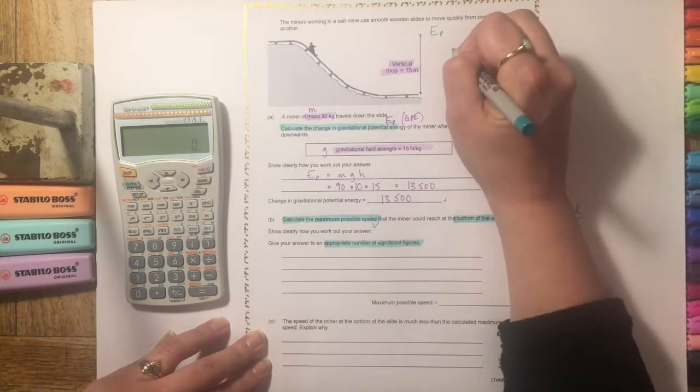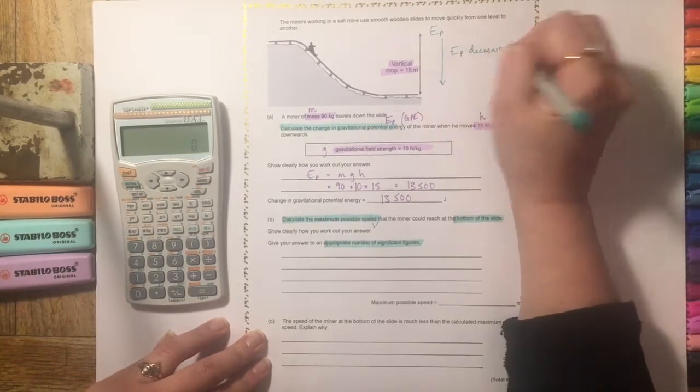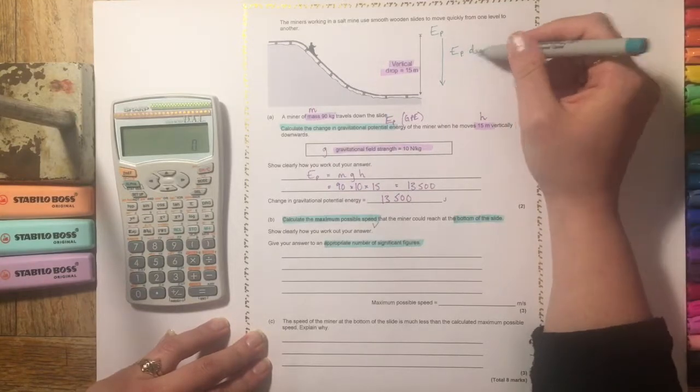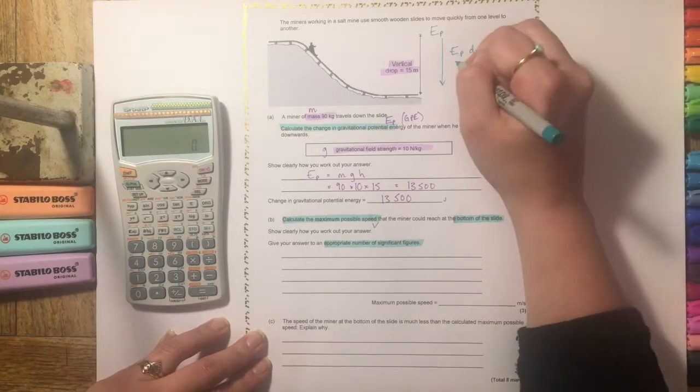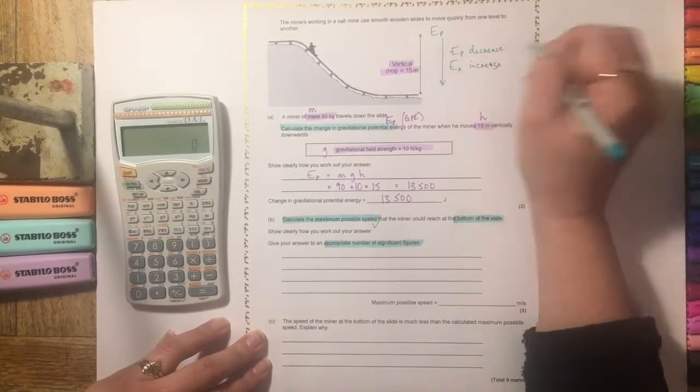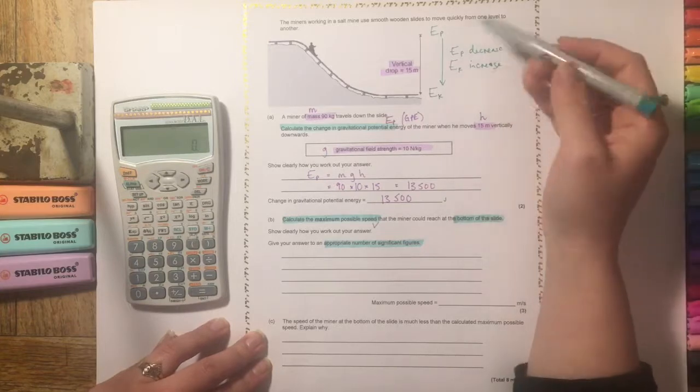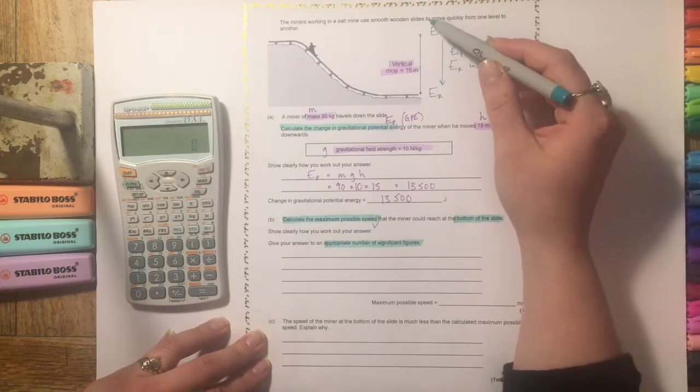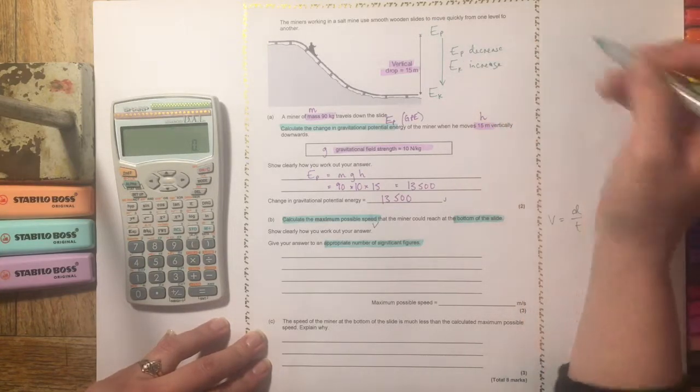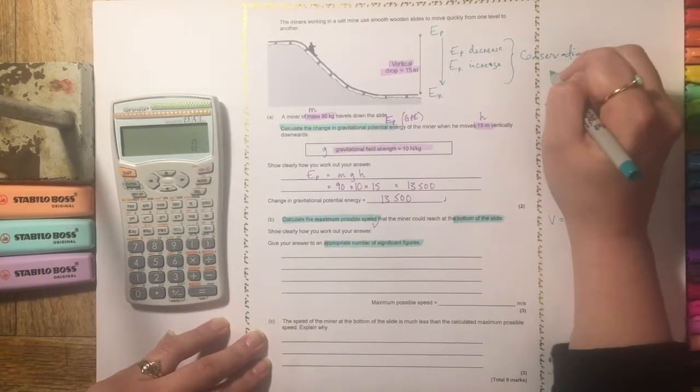then we're going to have Ep is going to decrease, so that gravitational potential energy store is going to decrease, and the kinetic energy store will increase. So Ek. So we know that in a perfect system, this is what we would call conservation of energy.